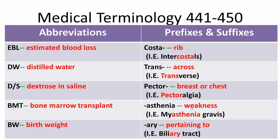Asthenia means weakness, so myasthenia gravis is a disease of impaired transmission of motor nerve impulses characterized by episodic muscle weakness. -Ary means pertaining to, so biliary tract means bile tract. Now you can pause the video and review.